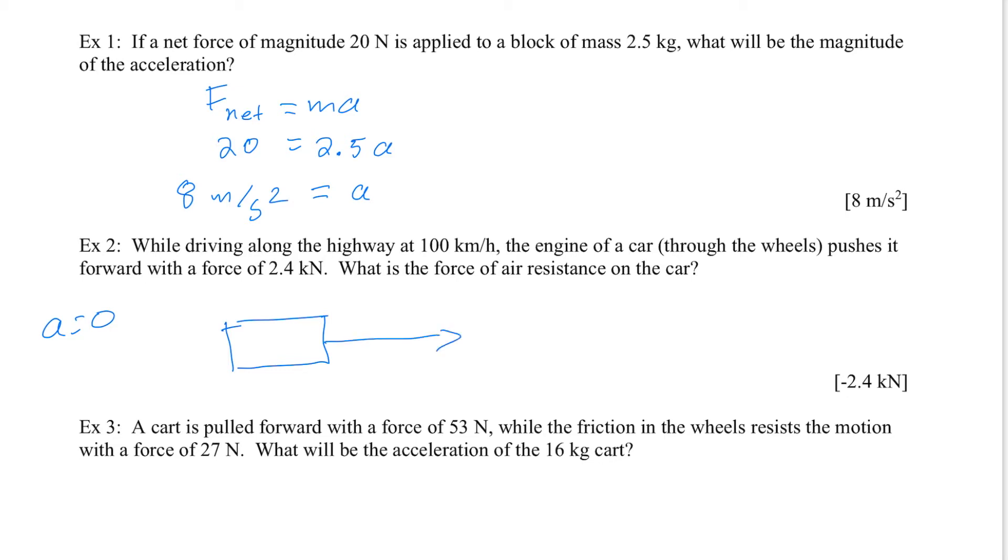So somehow or other, it's being pushed forward through the engine applied through the wheels with a force of 2.4 kilonewtons. That means that there must be a force going the other way, and the dominant force affecting cars that are traveling along the highway is air resistance, and it must be pushing the other way with a force of 2.4 kilonewtons, so that you can have an acceleration of zero, so that these two forces balance each other out, and the net force is zero. I've put a negative sign in front of it to make it clear that it is in the negative direction, in the opposite direction of this force.